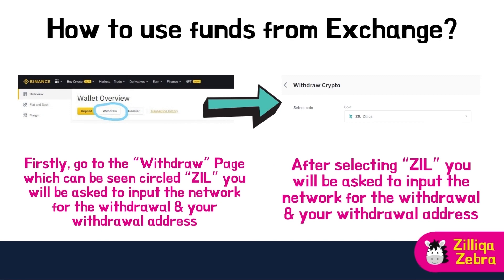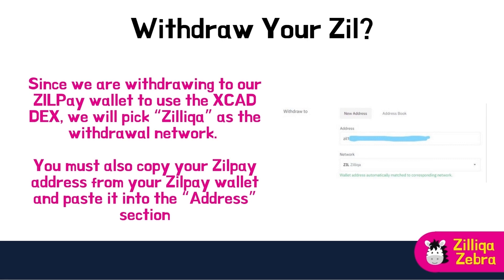If you currently have Zilliqa on an exchange and want to use it on the XCAD DEX, you can simply withdraw the Zilliqa to your Zilliqa wallet. Using Binance as an example: go to the withdraw page as circled on the page, select Zilliqa, then input the withdrawal network and your address. Since we are withdrawing to use the XCAD DEX, select Zilliqa as the withdrawal network, copy your Zilliqa address from your wallet and paste it into the address section. Input the amount you wish to withdraw, hit the withdraw button, and confirm with your 2FA codes. After confirming, the exchange will process it and send it to your wallet, and will usually give you an estimated arrival time.